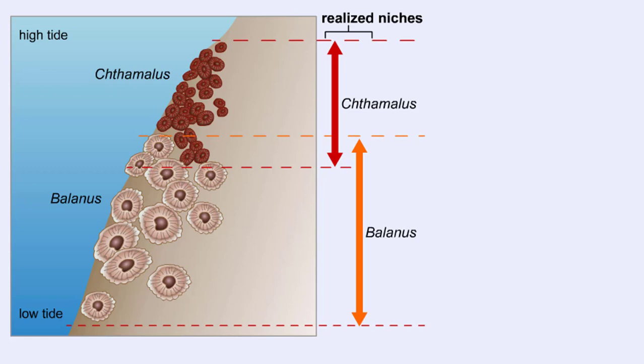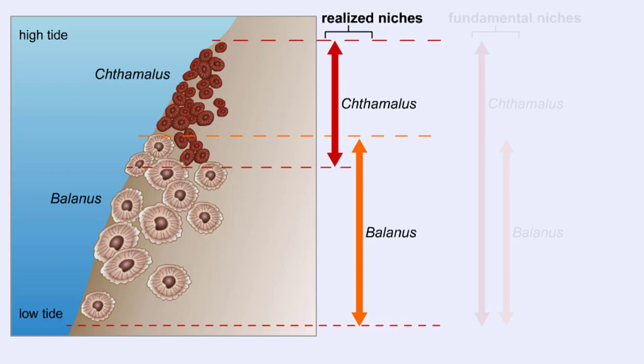This example illustrates the distinction between a species' realized niche, which is the role a species actually plays in the ecosystem, and its fundamental niche, which is the role it would play in the ecosystem if competitors were not present. In many cases, it is impossible to determine a species' fundamental niche without removing all of its competitors.